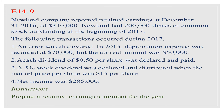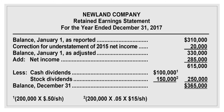Continued transactions: (2) a cash dividend of $0.50 per share was declared and paid; (3) a 5% stock dividend was declared and distributed when the market price per share was $15; (4) net income was $285,000. Instructions: Prepare a retained earnings statement for the year.